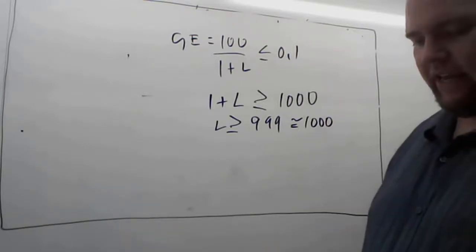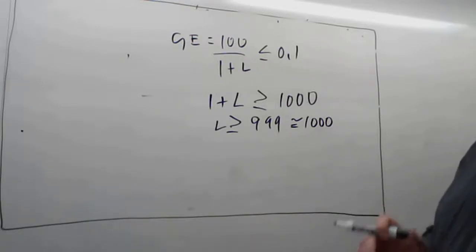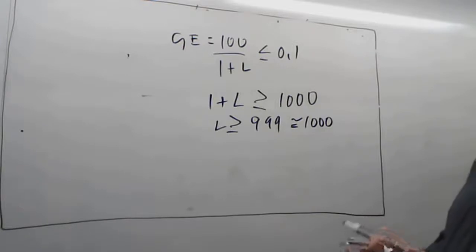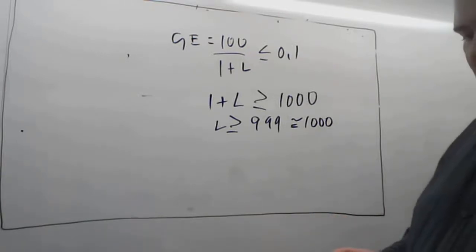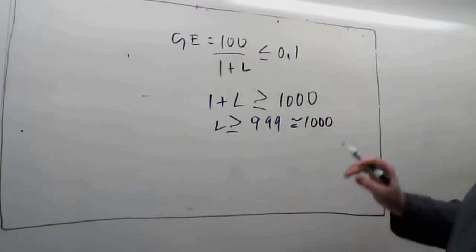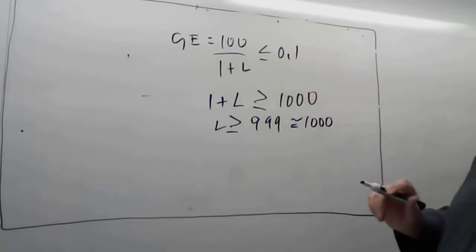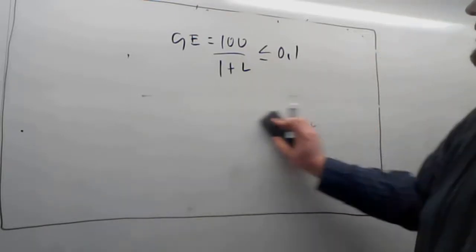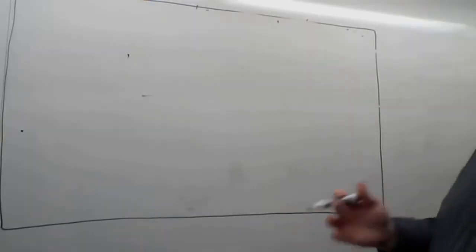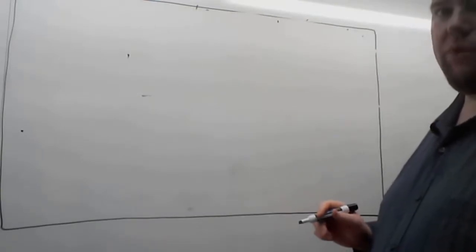Next, if we're trying to build an op-amp with an open-loop gain of 50 — like a non-inverting amplifier with a gain of 50 — the question is: what open-loop gain would we need in our op-amp to achieve a gain error of less than 0.1%? In other words, how good of an op-amp do we need to buy?